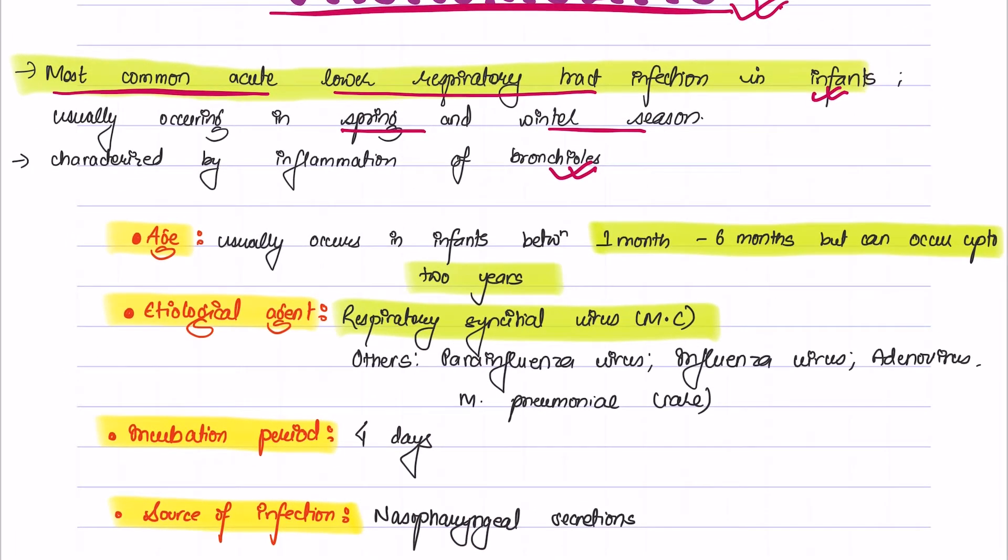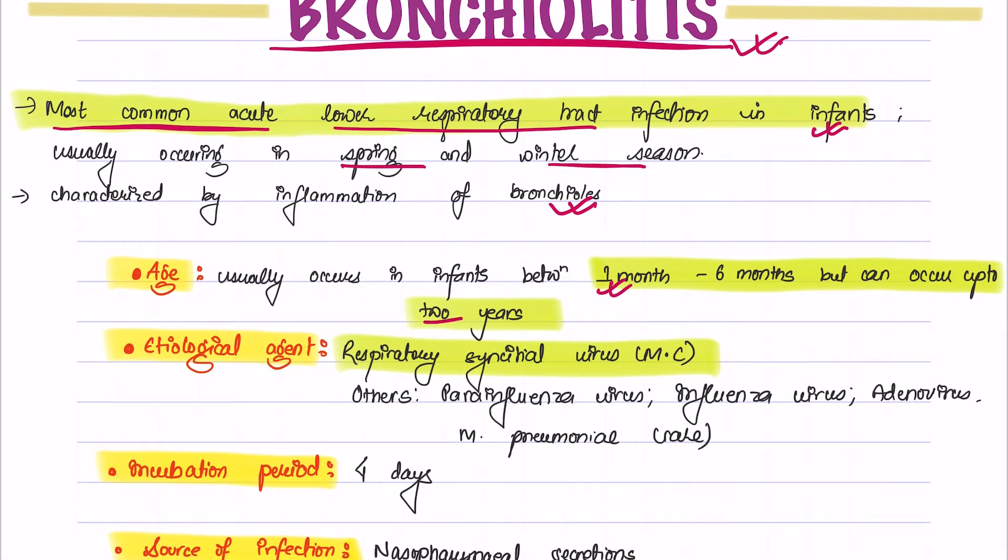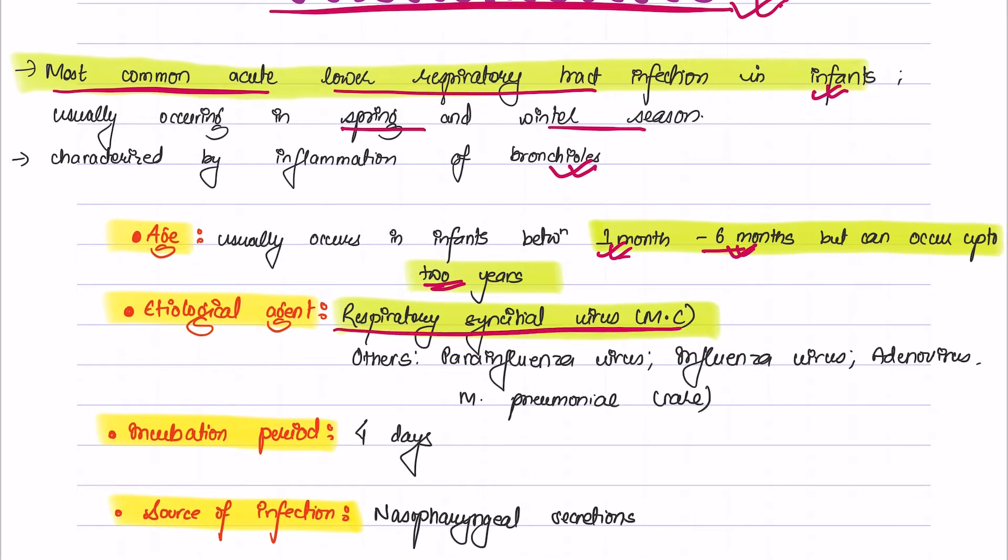The age of occurrence of bronchiolitis varies from one month to two years of age, but it usually occurs between one to six months of age. The etiological agent is respiratory syncytial virus, but other viruses like parainfluenza virus, influenza virus, and adenovirus may also be involved.